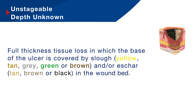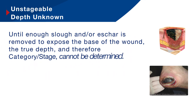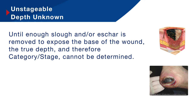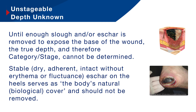Then we have unstageable, where the depth is unknown. This is full thickness tissue loss in which the base of the ulcer is covered by slough and/or escar in the wound bed. Until enough slough and/or escar is removed to expose the base of the wound, the true depth and therefore the category cannot be determined. If there is stable escar on the heels, this serves as the body's natural biological cover and should not be removed.